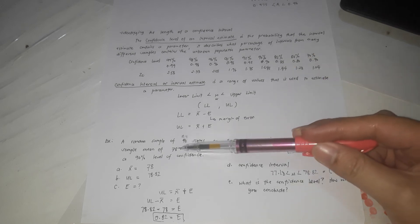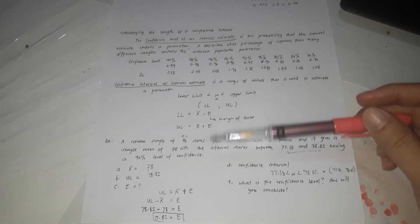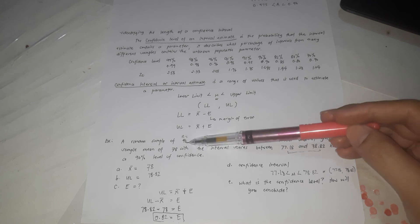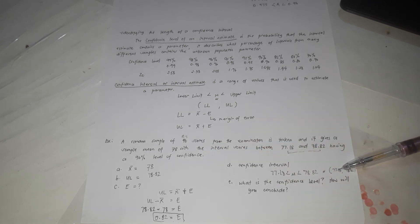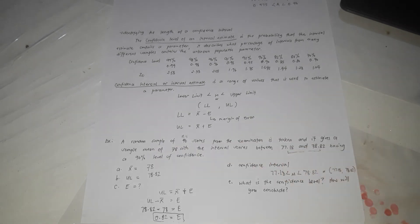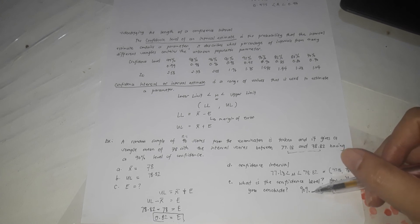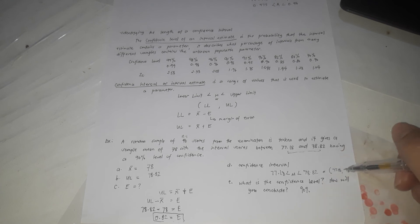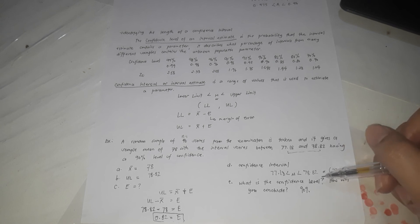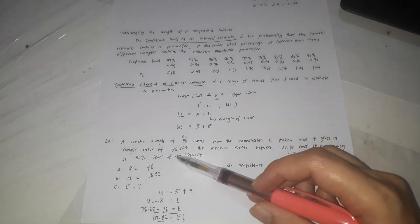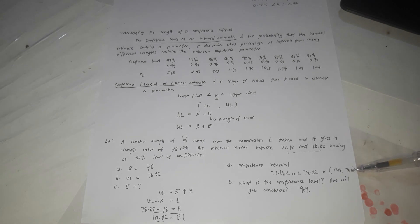The confidence level given is 90%. This means we are 90% confident that the mean score lies between 77.18 and 78.82. In other words, we are 90% confident that the population mean is between 77.18 and 78.82. That is the meaning of the 90% confidence level — we are 90% sure that the overall population mean, instead of just the sample mean of 78, falls between 77.18 and 78.82.